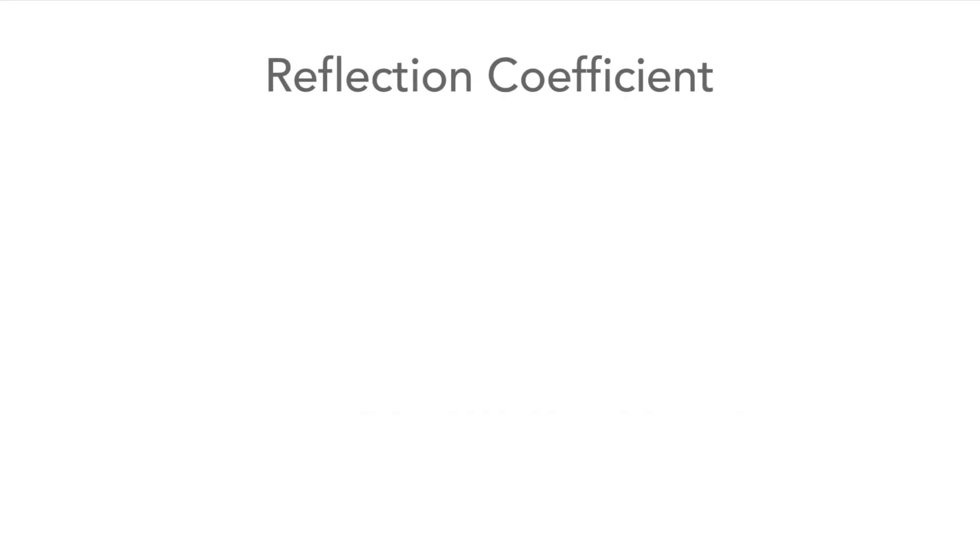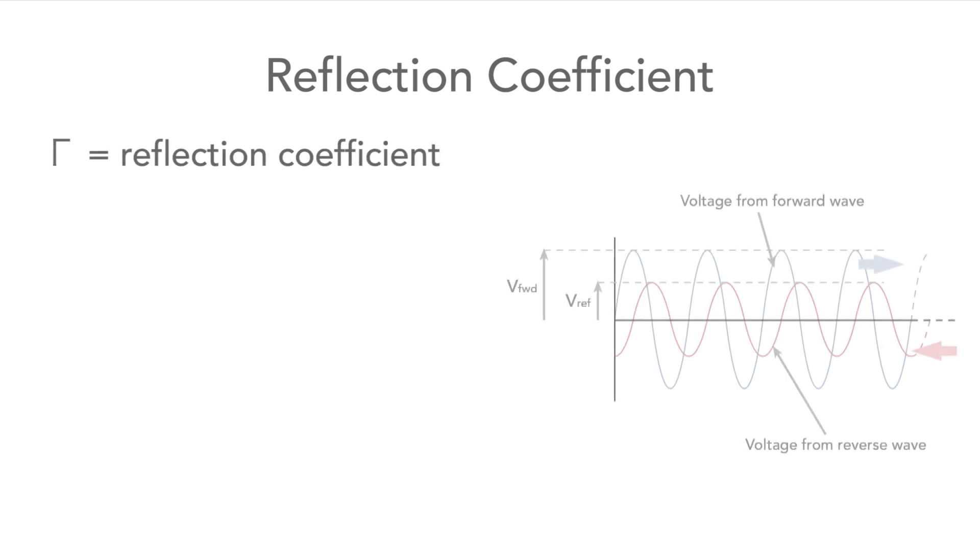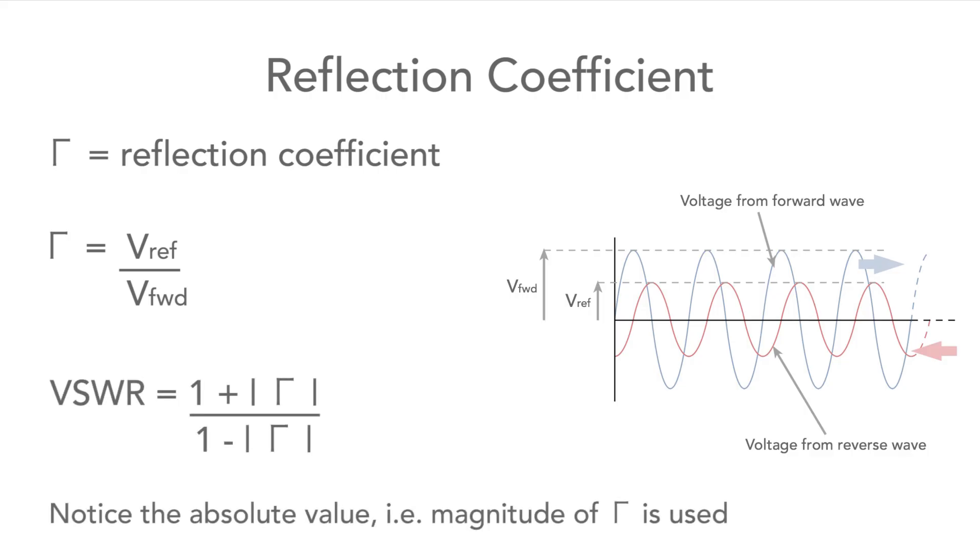It's also possible to look at the VSWR in terms of what is termed a reflection coefficient. This is another ratio and it's the ratio of the reflected wave to the incident wave. The reflection coefficient is normally denoted by the Greek letter capital gamma. The reflection coefficient can be used in an equation to work out the VSWR which we can see here.